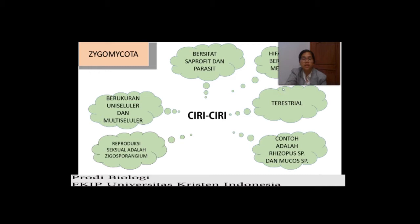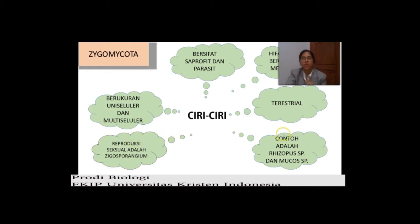Kemudian dia terestrial — terestrial adalah di mana suatu organisme tinggal di daratan. Berukuran uniseluler dan multiseluler. Reproduksi seksualnya adalah zigosporangium. Contohnya adalah Rhizopus SP dan Mucor SP. Rhizopus SP untuk tempe — kalian pasti pernah lihat tempe yang putih-putihnya. Itu merupakan benang-benang halus dari jamur yang mengikat kedelai satu dengan yang lain.